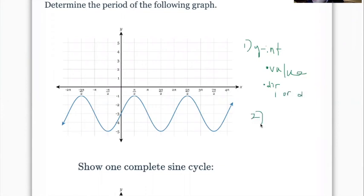And then step number 2, trace the graph until we return to where we started. So until we return to the same value as the y-intercept and the direction. And then wherever that stopped, we look at the x-axis to find the value of the period.